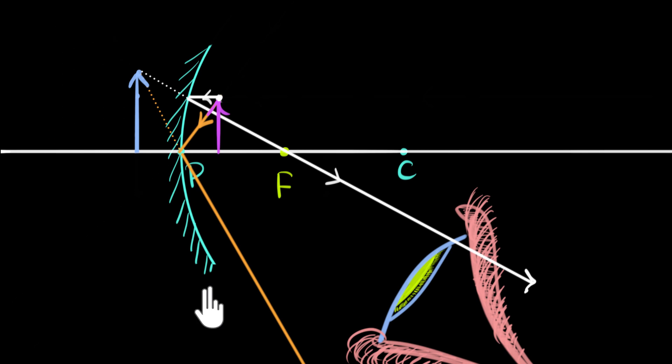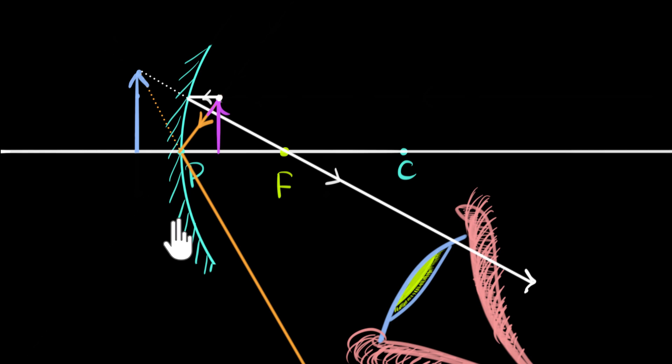This is the story of concave mirrors. The key summary: as long as the object is outside the principal focus, the image will be real. Inside the principal focus, it's virtual. The closer the object is to the principal focus, the bigger the image will be. I don't want you to memorize this — all of it can be worked out just by drawing ray diagrams.